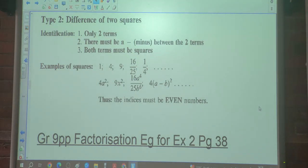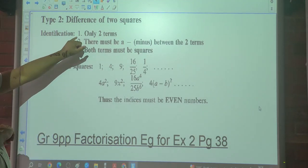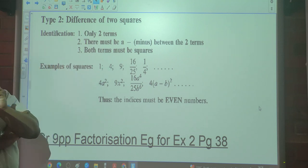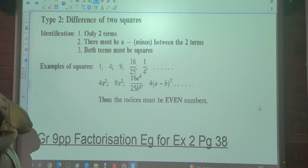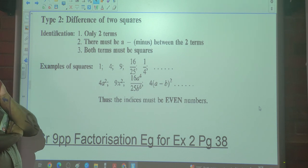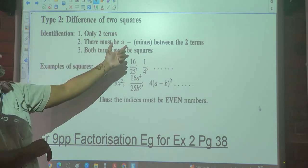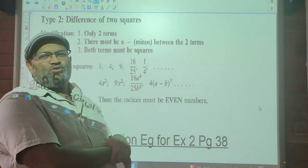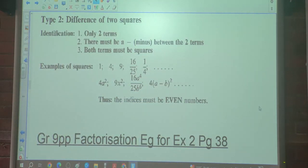So how do we know we're going to apply the Difference of Two Squares? Firstly, identification: it has only two terms. Second, there must be a negative or minus sign between the two terms.